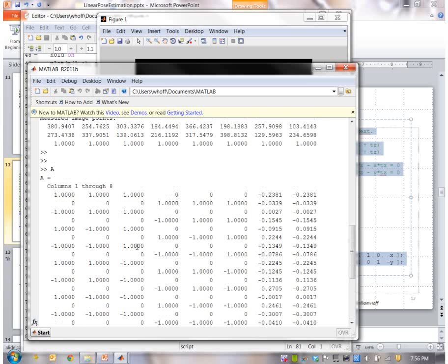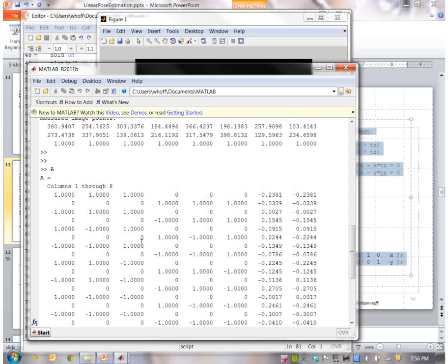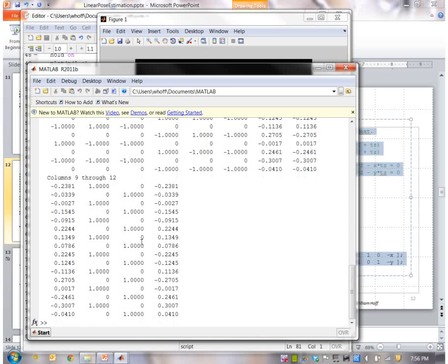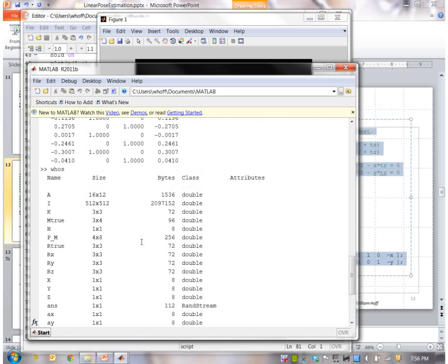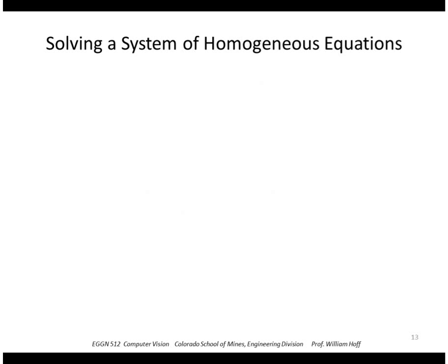So here my A matrix is a 16 by 12 matrix because I have 8 points, each point contributes 2 unknowns, and there's 12 unknowns here.